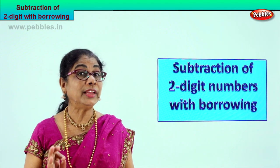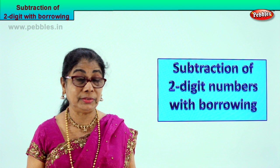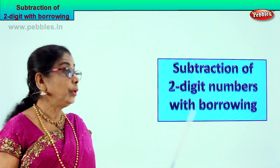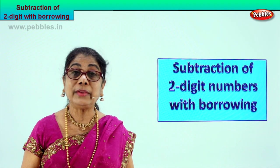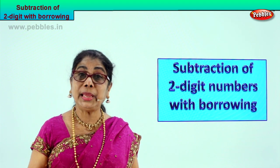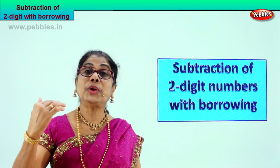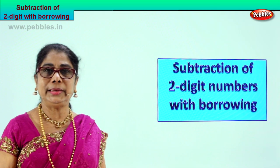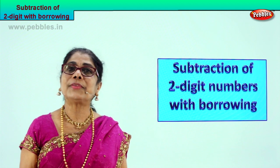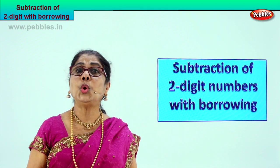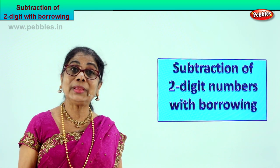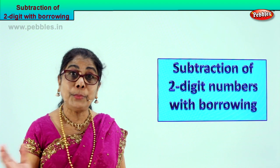Hi children, today we are doing something different. We are doing subtraction of two digit numbers, and here we are going to borrow. When the second number is small on top and big on the bottom, you have to borrow — you cannot minus a big number from a small number. So we are going to do subtraction with borrowing.